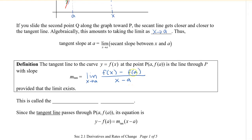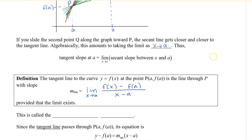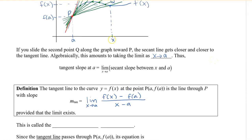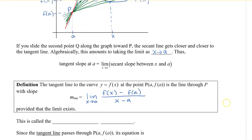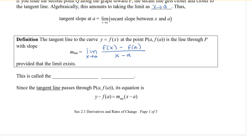Now, without the word limit, if we only look at this fraction, that's the slope of our secant line. However, by putting the limit as x approaches a, we're saying that x is approaching a, and hence the denominator is going to become zero. So if we actually say that x was actually a, we could see that in the numerator and the denominator it would be zero. This difference here is actually called the difference quotient.